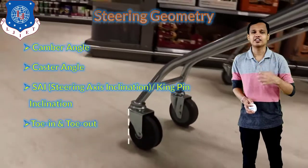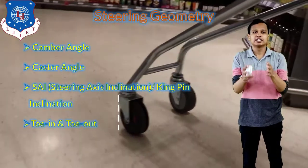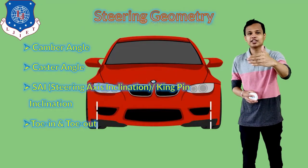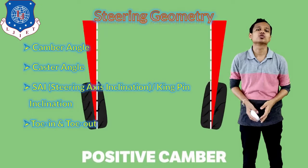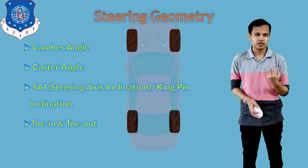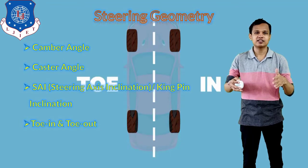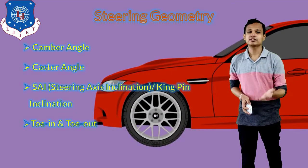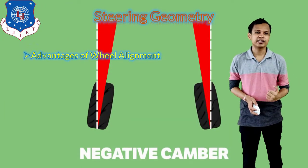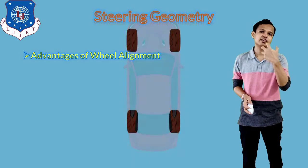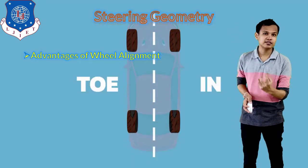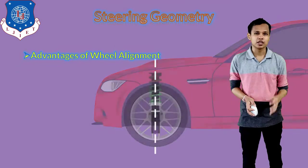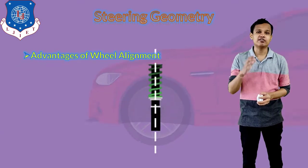The fourth element is toe-in and toe-out. Whenever we see the vehicle from the top, the angle that the wheels create is known as toe-in. The difference between the front side and the rear side of the car is known as the toe angle or toe distance. It can be toe-in if the tires are angled inward, and toe-out when they are angled outward. These angles are very important for vehicle driving — any drastic change in any of these parameters will affect vehicle performance significantly.